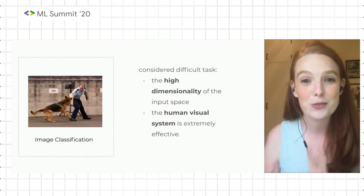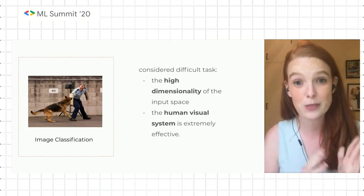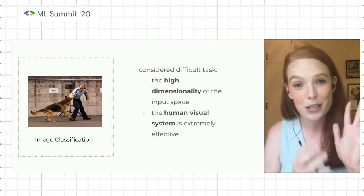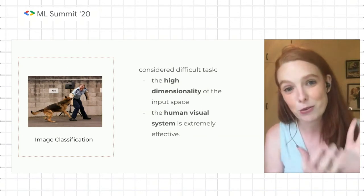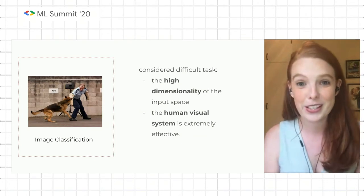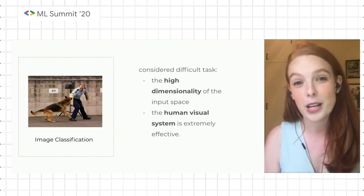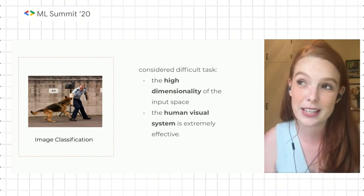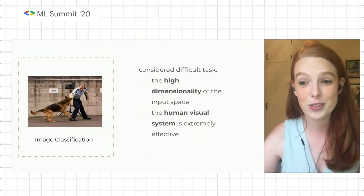It's considered a difficult task because of both the high dimensionality of the input space — pixels are typically 299 by 299, which means that a single image can have a quarter of a million features — as well as how good we as humans are at vision. It's very difficult to beat us because we can handle variation in poses, we're very robust to things like differences in contrast, or identifying objects in the night versus day.